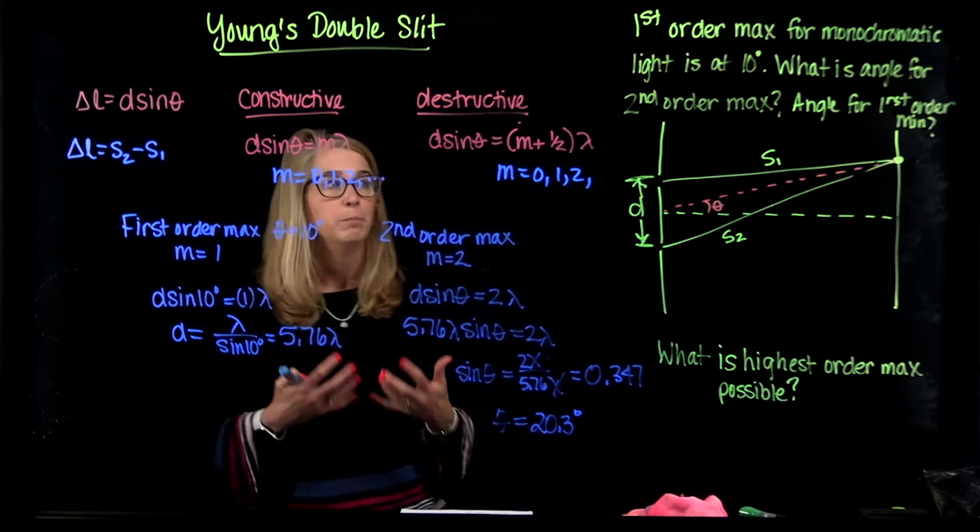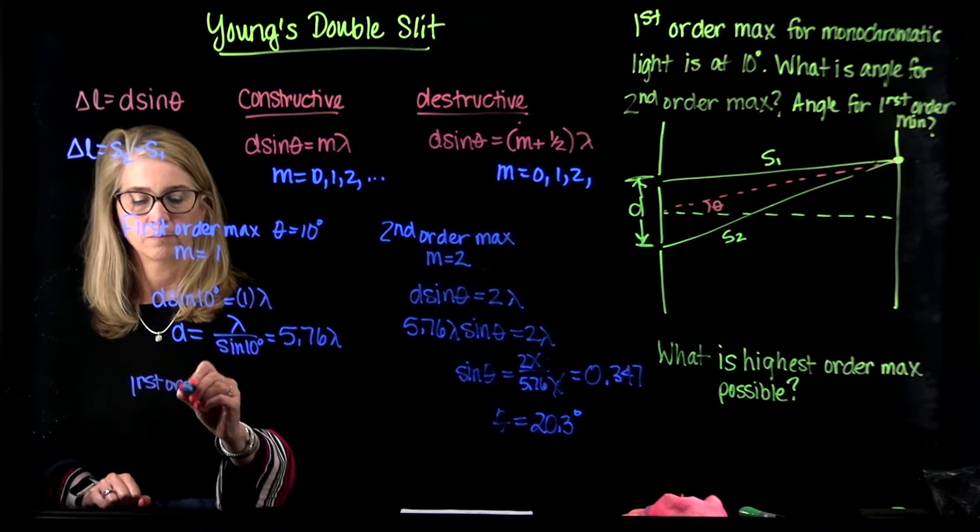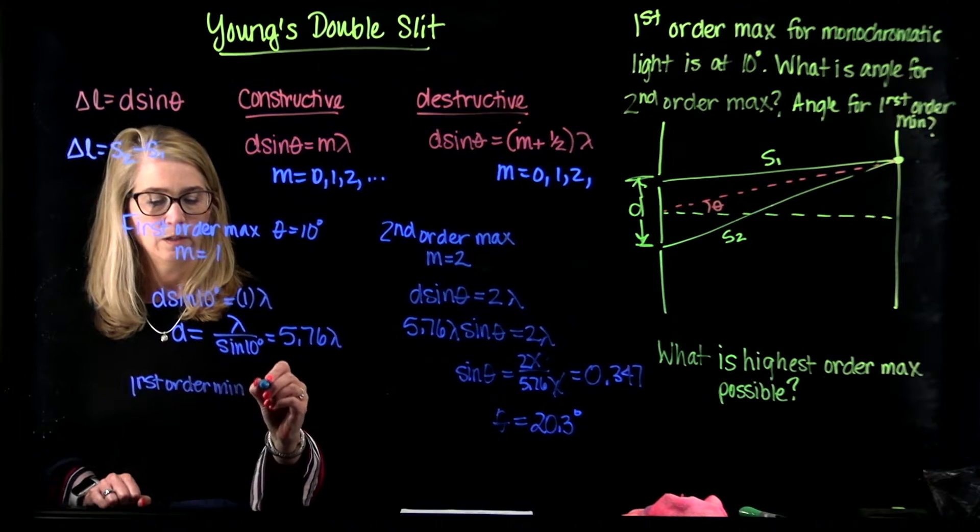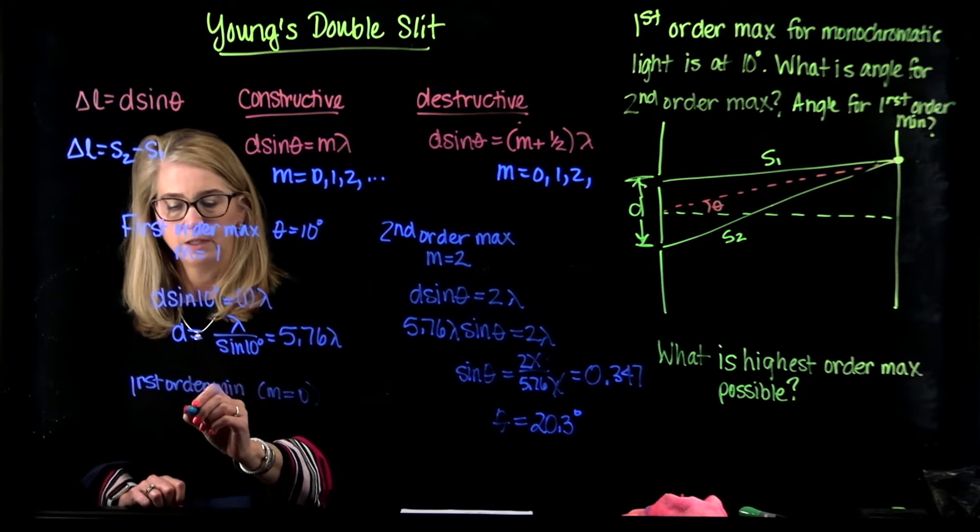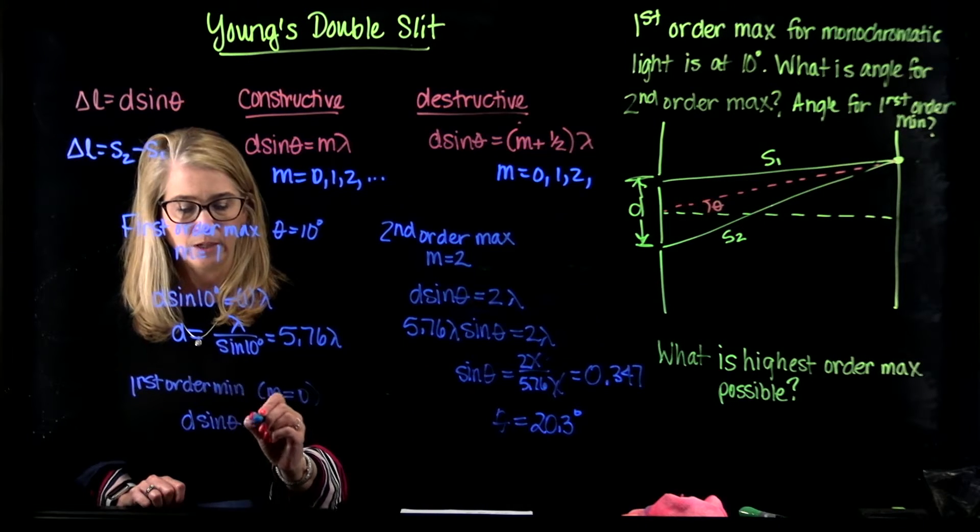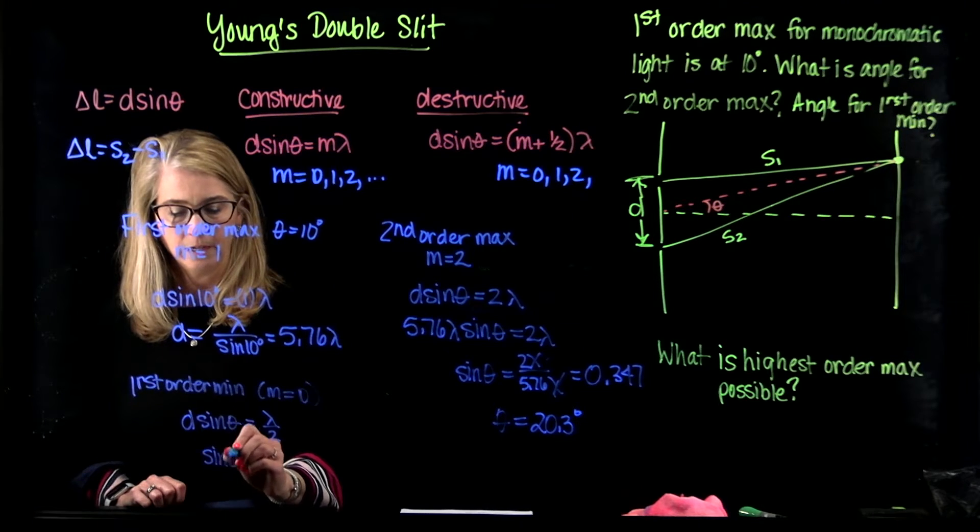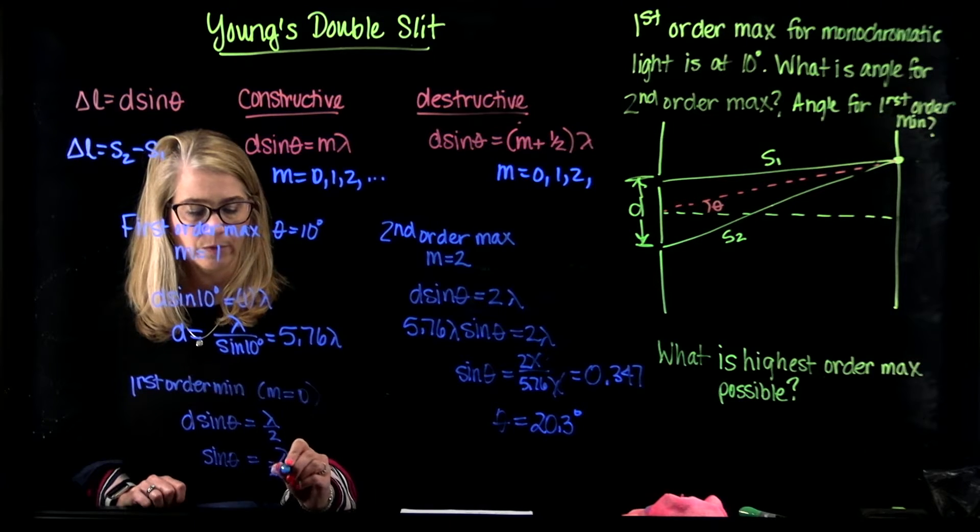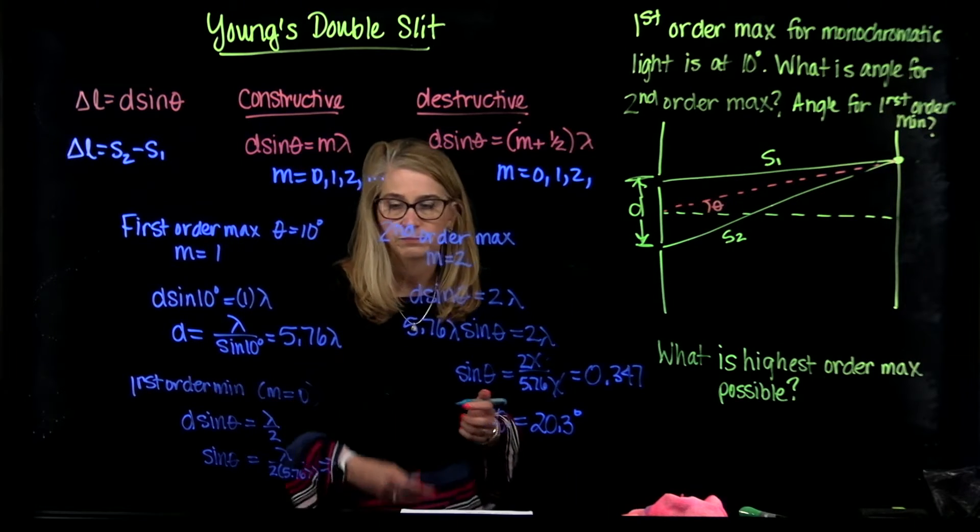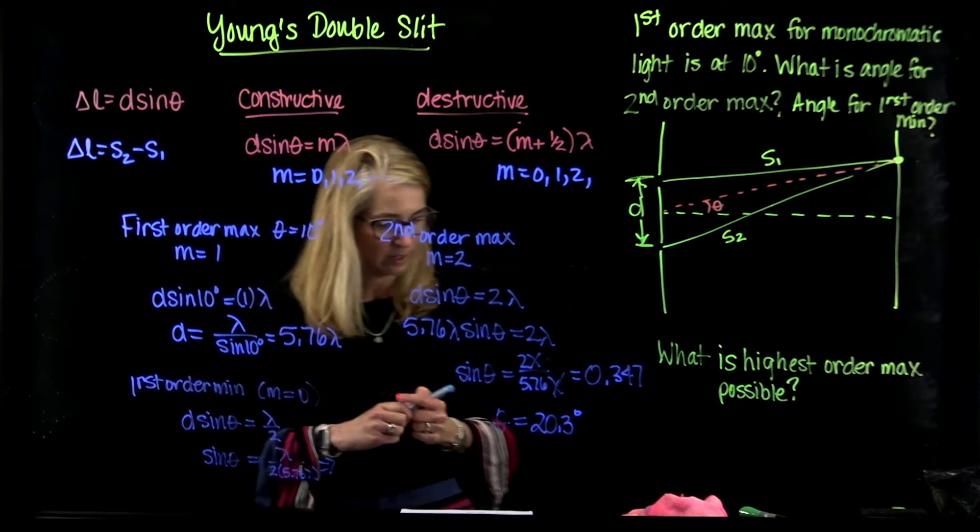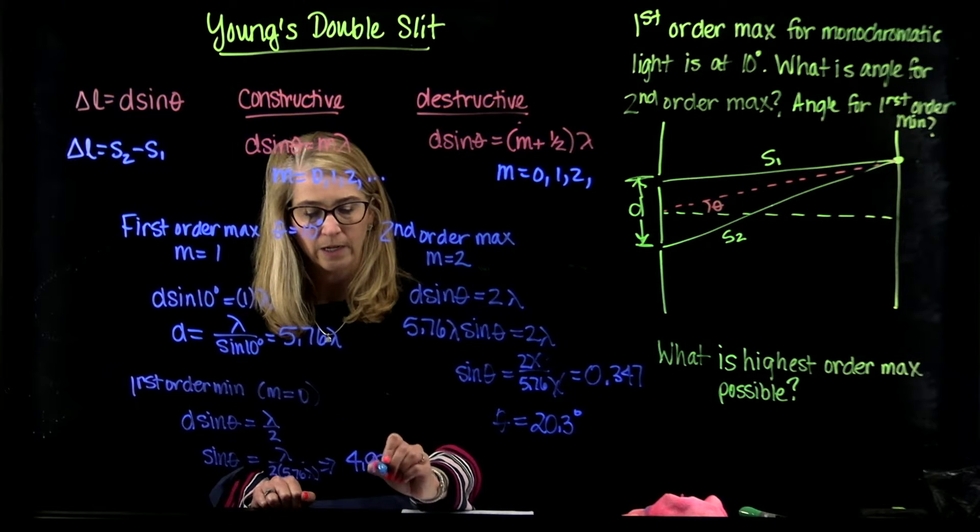Now for the first order minimum, that is the condition is, this is also M equals 0 actually, because it's the first one that's going to occur. That means that D sine theta is equal to lambda over 2. So sine of theta is equal to lambda over 2 times 5.76 lambda. And then I can take the inverse sine of this and get the angle, which ends up to be 4.98 degrees.